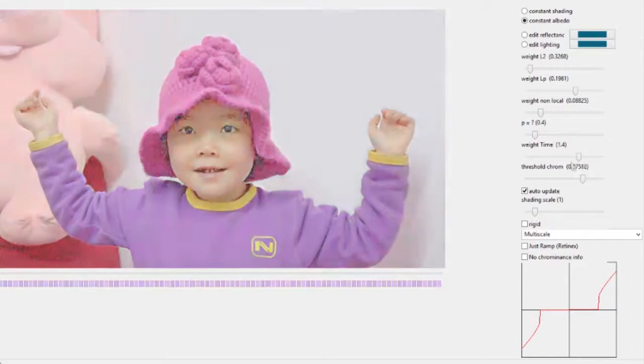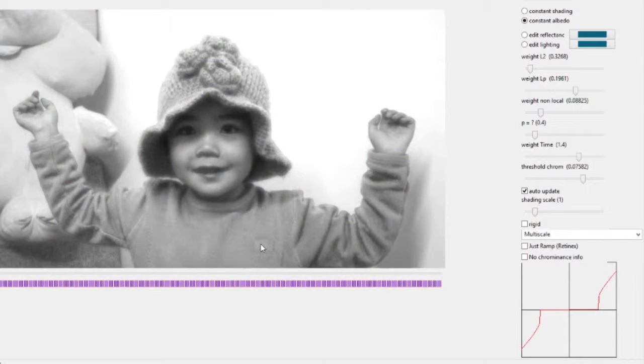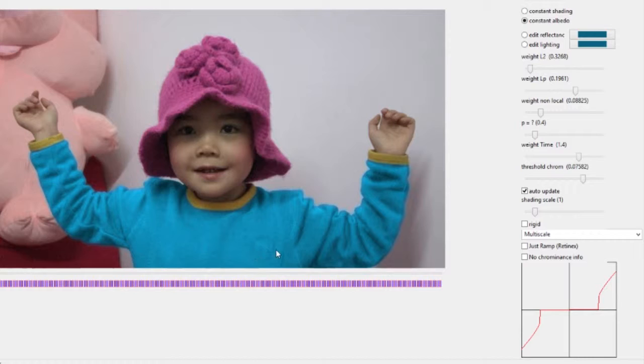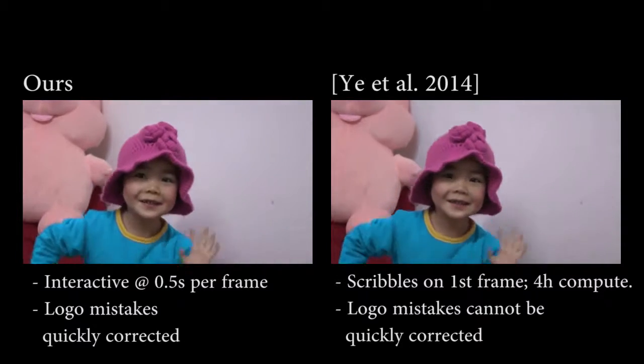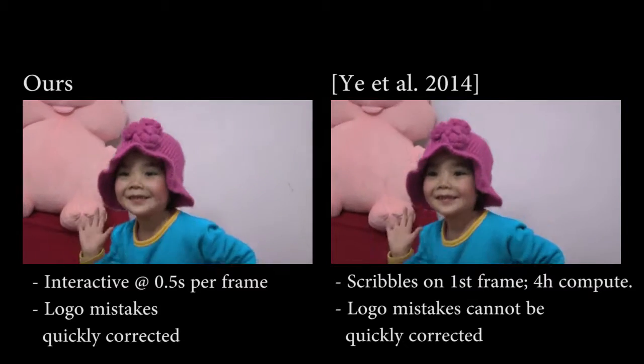As we saw before, the shirt logo is hard for methods to handle and this affects the quality of edits. With a constant illumination brush, our user corrects this mistake. Seven further strokes are made to the logo at different frames to handle occlusions. However, this is all the interaction needed to successfully decompose this example. The resulting recolouring is now more convincing.